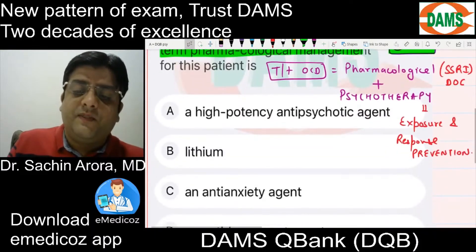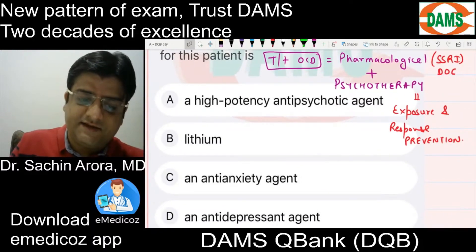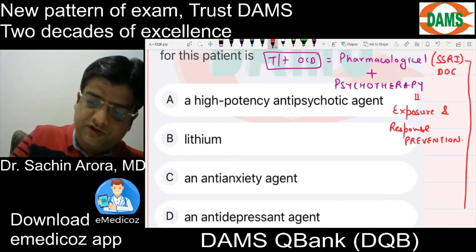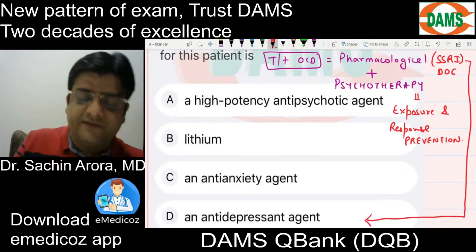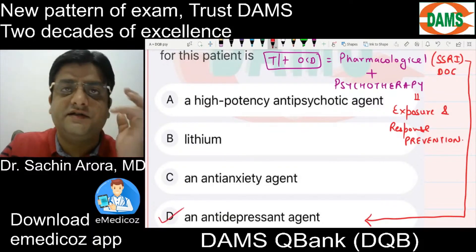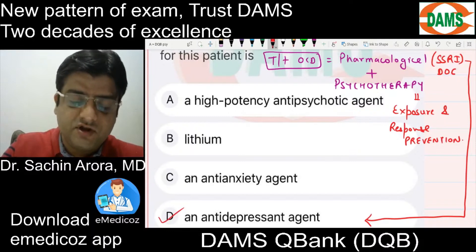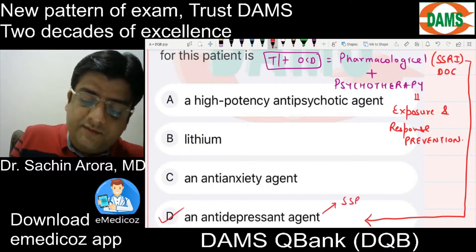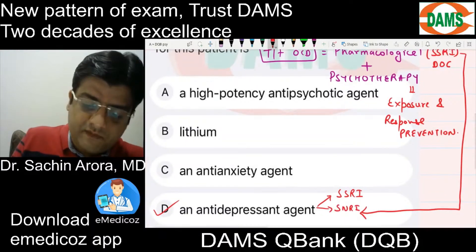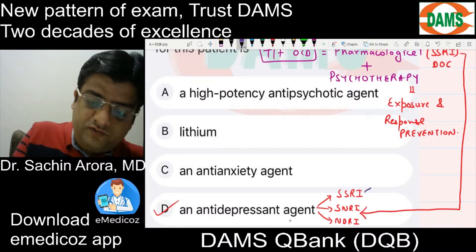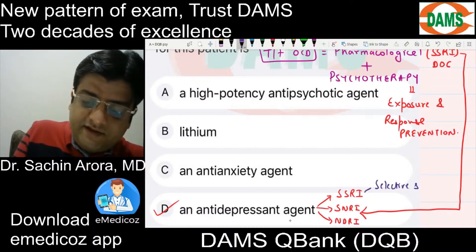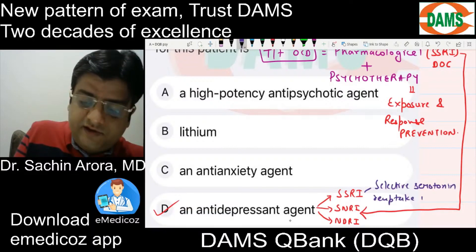We are asked about the pharmacological management. Now SSRI technically belongs to which group of agent? Antidepressant. As far as classification is concerned, SSRI — although used very well in anxiety disorders — as a group it belongs to antidepressants, which includes SSRI, SNRI, NDRI, etc. So as a group, SSRI belongs to antidepressant — Selective Serotonin Reuptake Inhibitor.